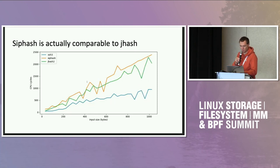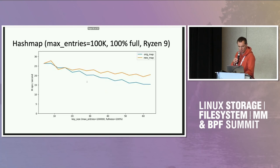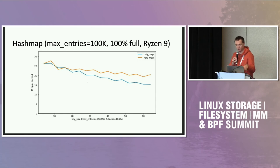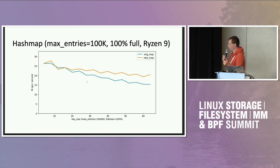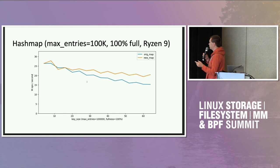Siphash, in terms of speed, doesn't get any benefits compared to jhash. Here is an example of how using xxh3 in a HashMap affects the map.